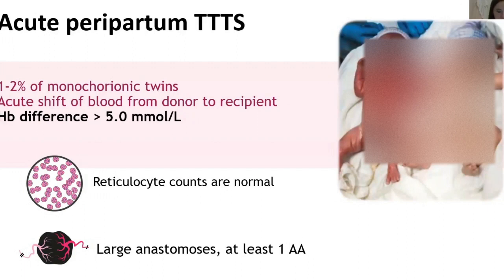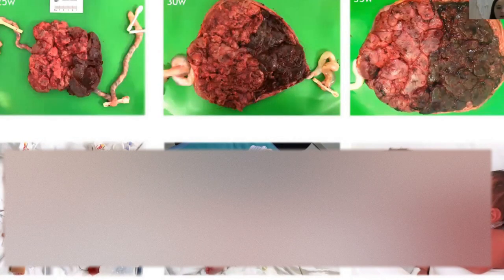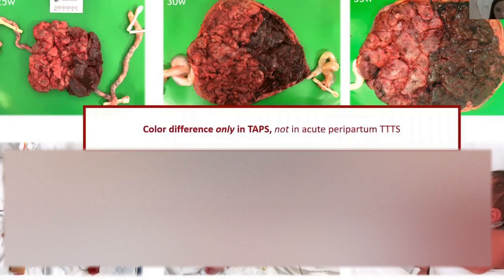That is why it is important to check for TAPS antenatally but also to perform this diagnostic workup at birth. One last vital thing to look at is the placenta — not the fetal side, but the maternal side, the side that sticks to the uterine wall. In TAPS, you can see a large difference in color, in line with the skin color difference at birth. In acute TTTS, the placenta is equally colored. We always advise caregivers: flip the placenta and look at the other side. If you see a large color difference, it is more likely to be TAPS and not acute peripartum TTTS.